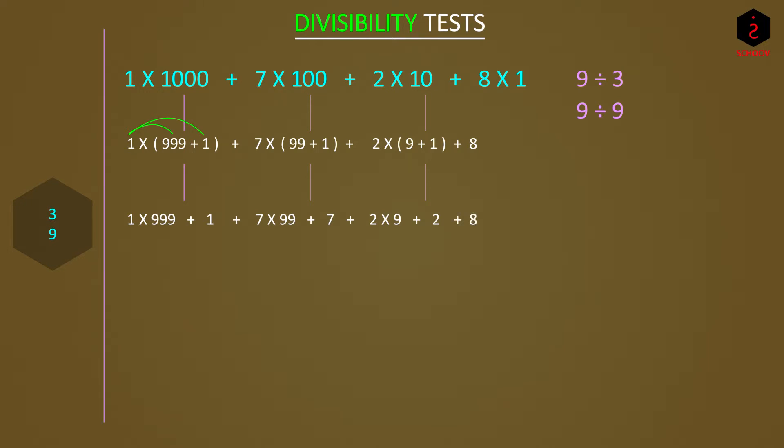Collect the terms with 9 and we get 1 x 999 plus 7 x 99 plus 2 x 9. And the rest is 1 plus 7 plus 2 plus 8, which is nothing but the sum of the digits of the number 1728. Now the first three terms are clearly divisible by 3 and 9 both. So we have to check the sum of the digits only. The sum is 18 and 18 is divisible by both 3 and 9.